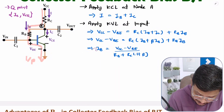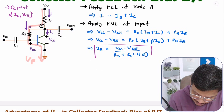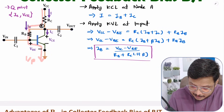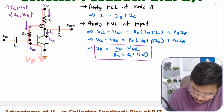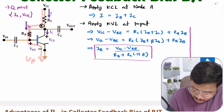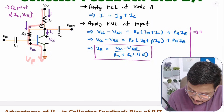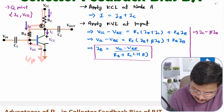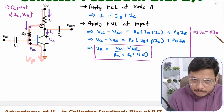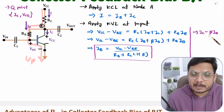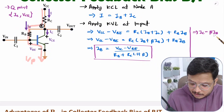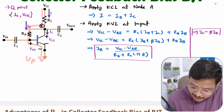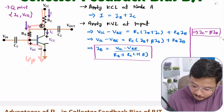From the base current equation we can find the output current IC. Since IC = β·IB, multiplying IB by the common emitter current gain β gives us IC. That is how we derive the output current equation.